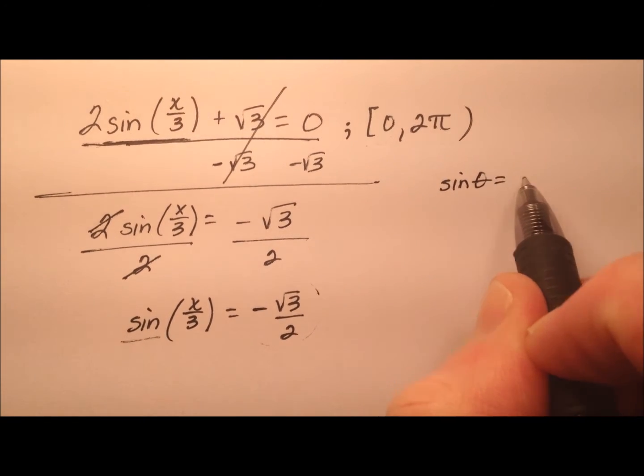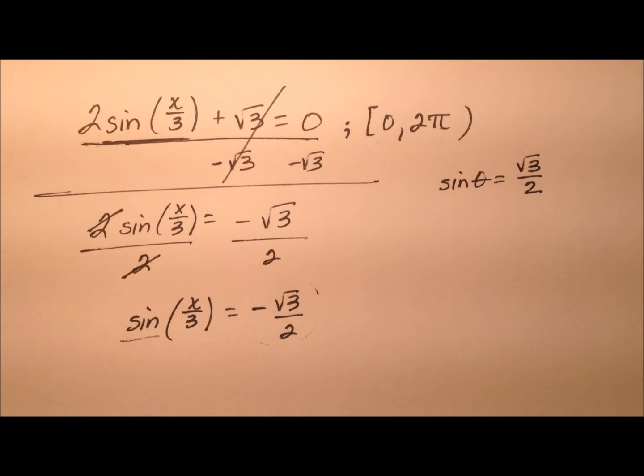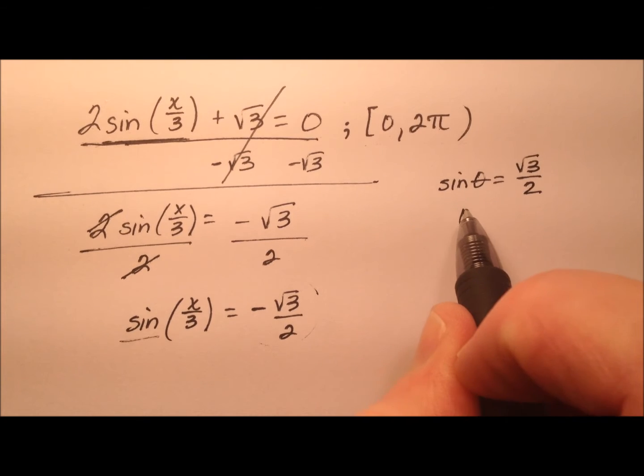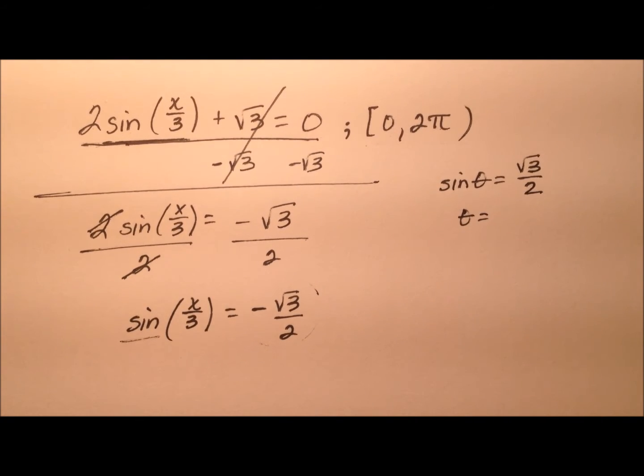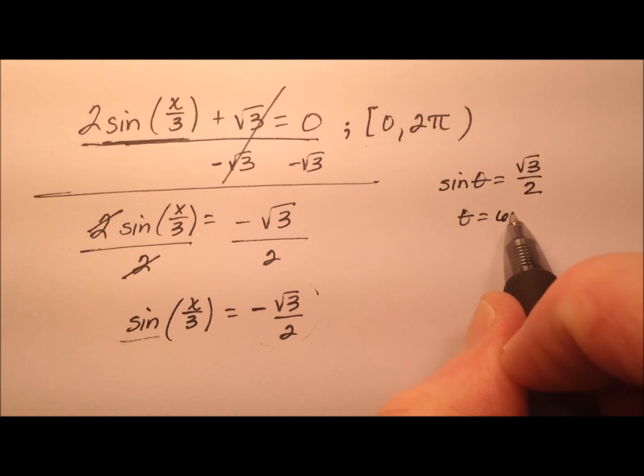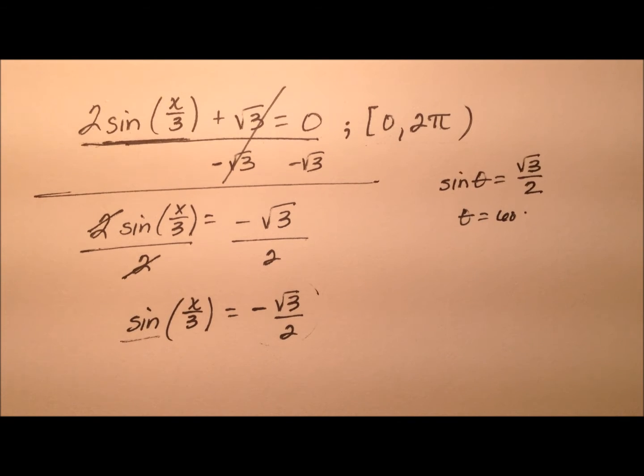So sine of theta equals the square root of 3 over 2. Where is this the case? What's the reference angle? Where is sine the square root of 3 over 2? And that's going to be 60 degrees.